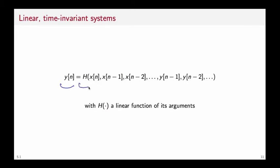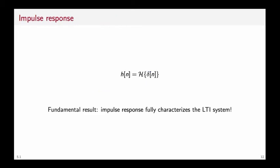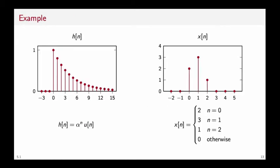The impulse response is the output of a filter when the input is the delta function. A fundamental result states that the impulse response fully characterizes the behavior of an LTI system. Let's see why that is so. Assume that we have a filter and we can measure its impulse response by inputting a delta function. And it turns out that the impulse response is an exponentially decaying sequence h of n equal to alpha to the power of n times the unit step. Now we want to use the same filter to filter an arbitrary sequence x of n that in this example is simply a three-point sequence that is equal to 2 for n equal to 0, is equal to 3 for n equal to 1, and is equal to 1 for n equal to 2, and is 0 everywhere else.